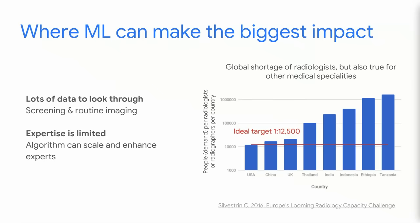When you think about where machine learning and especially deep learning can make the biggest impact, it's really in places where there's lots of data to look through. One of our directors, Greg Corrado, puts it best: deep learning is really good for tasks that you've done 10,000 times and on the 10,000th time you're just sick of it. This is really great for healthcare in screening applications where you see a lot of patients that are potentially normal. It's also great where expertise is limited — you can see a graph of the shortage of radiologists worldwide, and we basically see a worldwide shortage of medical expertise.